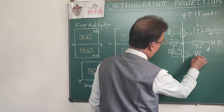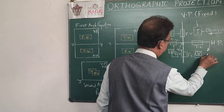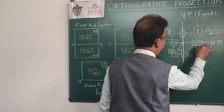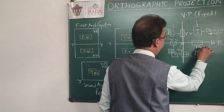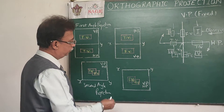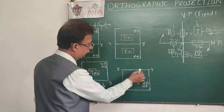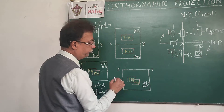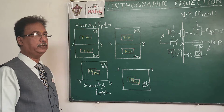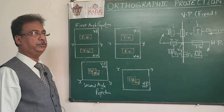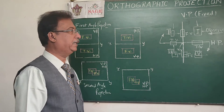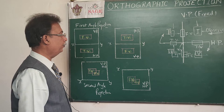When the object is in the fourth quadrant, the front view is on the VP and the top view is on the HP. The rotation is downward, giving us: reference line, then top view, then front view. These are the four ways of projecting any object when placed in the first, second, third, or fourth quadrant.